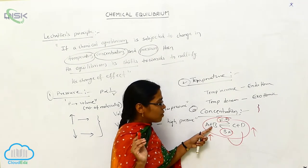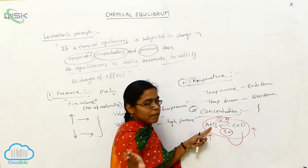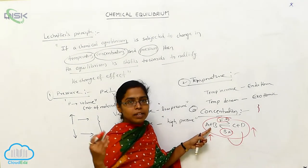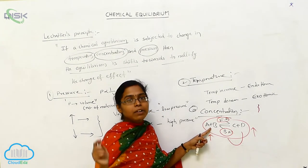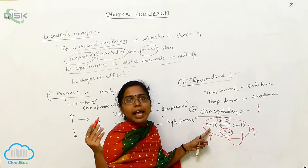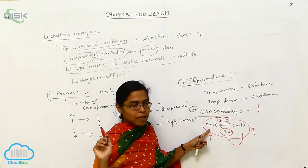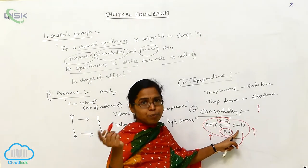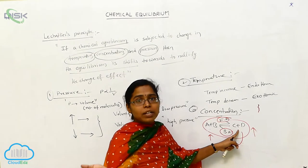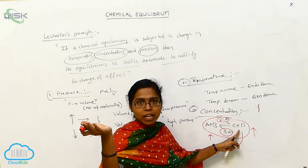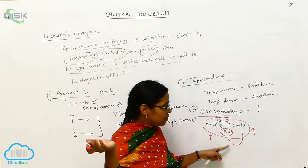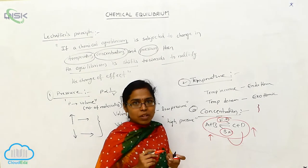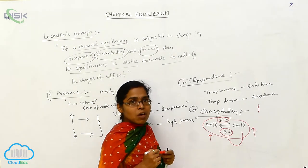Based upon the reactant concentration: whenever the concentration is increasing on the reactant side, the forward reaction takes place. Whenever you take the product side and the concentration increases, then the backward reaction occurs.